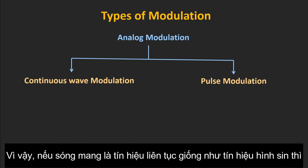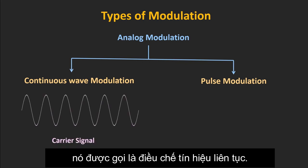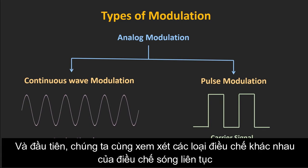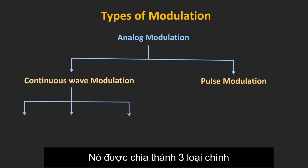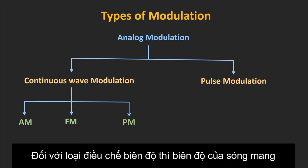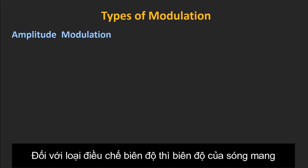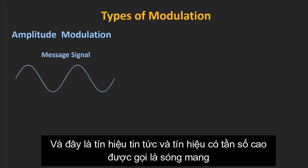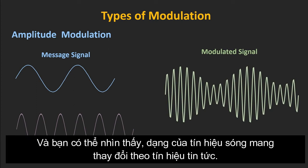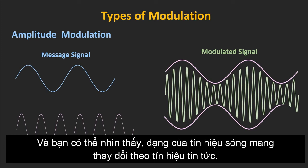If the carrier signal is a continuous wave signal like a sine wave, it is known as continuous wave modulation. If the carrier signal is a pulse signal, it is known as pulse modulation. The main types of continuous wave modulation are amplitude modulation, frequency modulation, and phase modulation. In amplitude modulation, the amplitude of the carrier wave changes according to the message signal. The shape of the carrier wave changes according to the message signal.